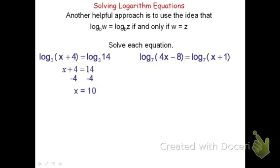Use the same approach on the next problem. We have log base 7 of (4x minus 8) equals log base 7 of (x plus 1). Since both logs have the same base and are equal, the arguments must be equal: 4x minus 8 equals x plus 1. Subtracting x, adding 8, then dividing by 3 gives x equals 3.